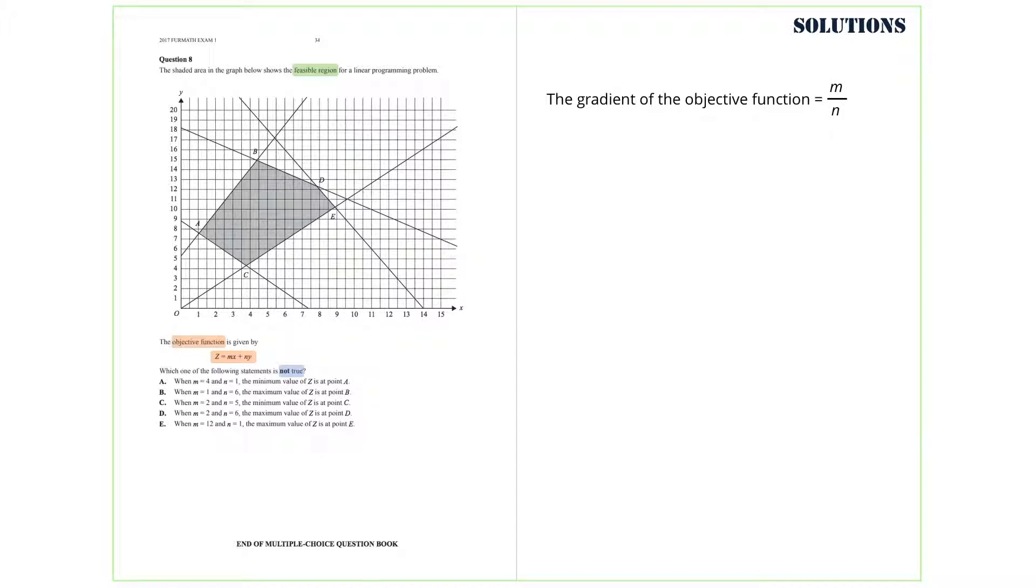The gradient of the objective function is equal to M over N. In option A, when M equals 4 and N equals 1, the gradient of Z is 4. So, we draw a line of gradient 4 and we move it across and the minimum value occurs at point A. So, we cross out option A because this option is true.